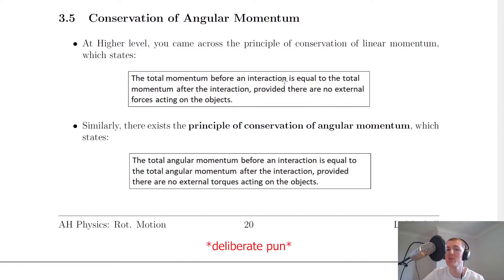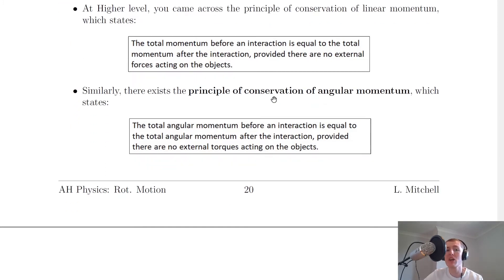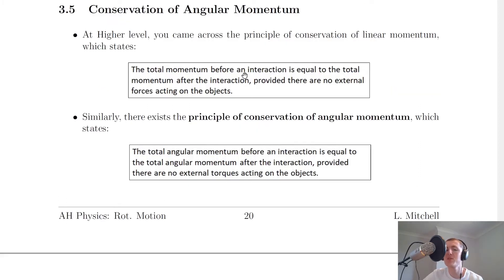We're now going to put an angular spin on this and talk about conservation of angular momentum. Similarly, there exists the principle of conservation of angular momentum, which states that the total angular momentum before an interaction is equal to the total angular momentum after the interaction, provided there are no external torques acting on the objects. Notice the similarities between these two principles, and you'll see there's only very slight differences. We're saying angular momentum here instead of linear momentum, and no external torques instead of no external forces.